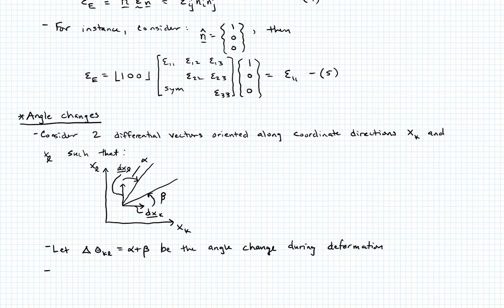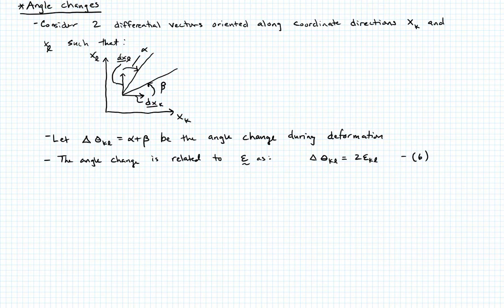That angle change is related to the strain tensor that we defined above as follows. We would say that delta theta KL is equal to 2 times epsilon KL. Call that equation 6. You'll probably notice that this is now the definition of the engineering shear strain. It's going to be defined as our conventional gamma KL. It's going to be equal to 2 epsilon KL, which is equal to the angle change delta theta KL. Call this equation 7.